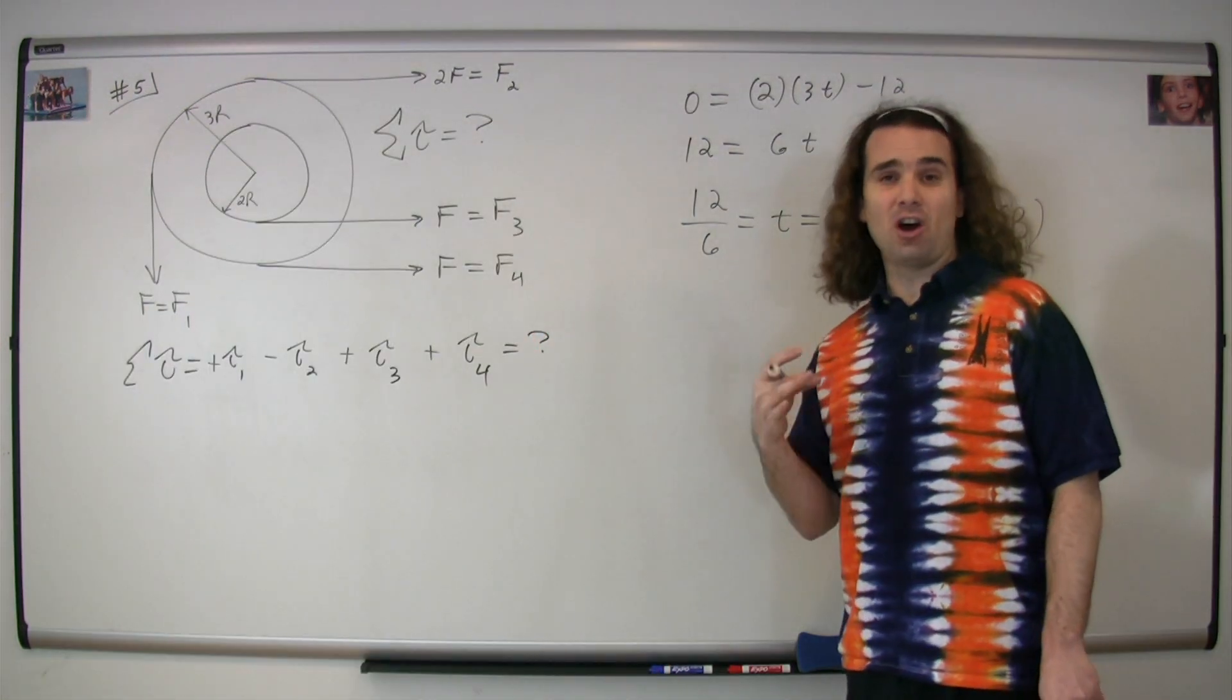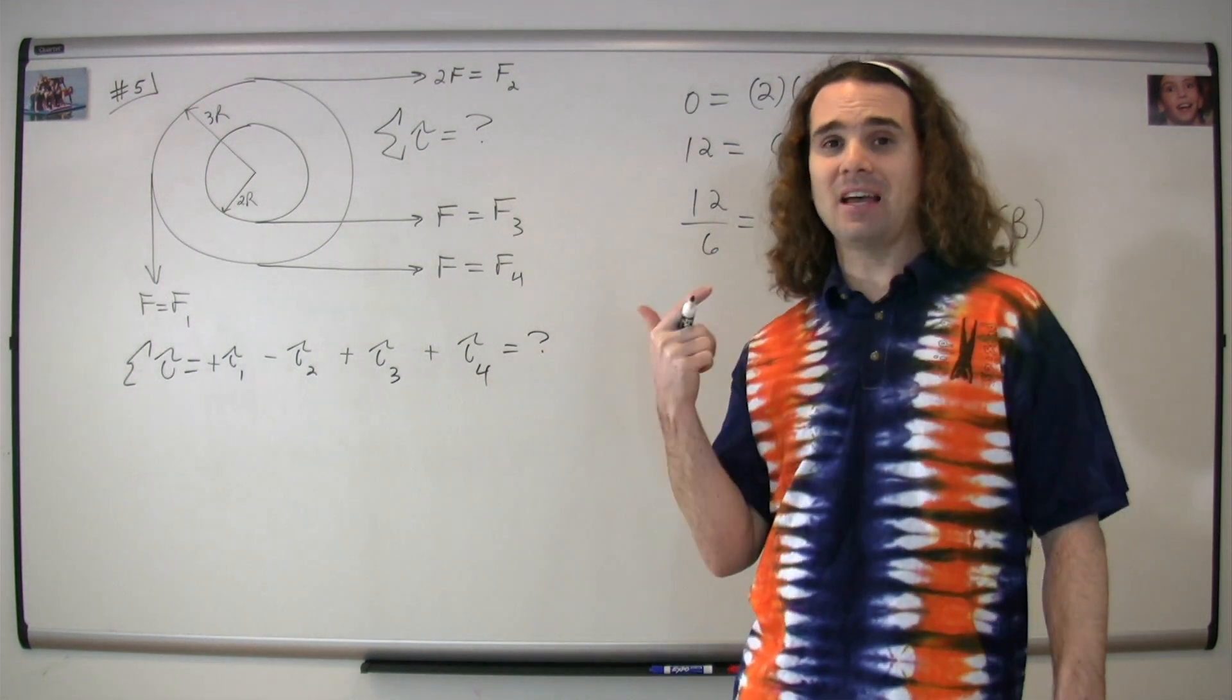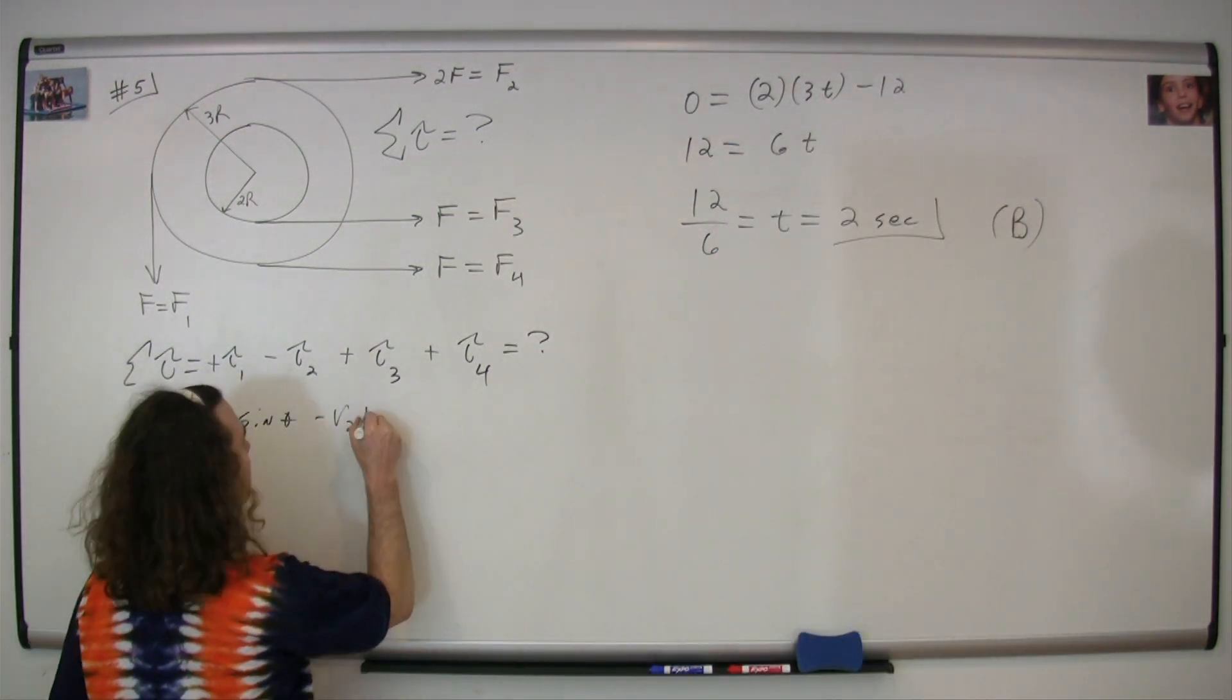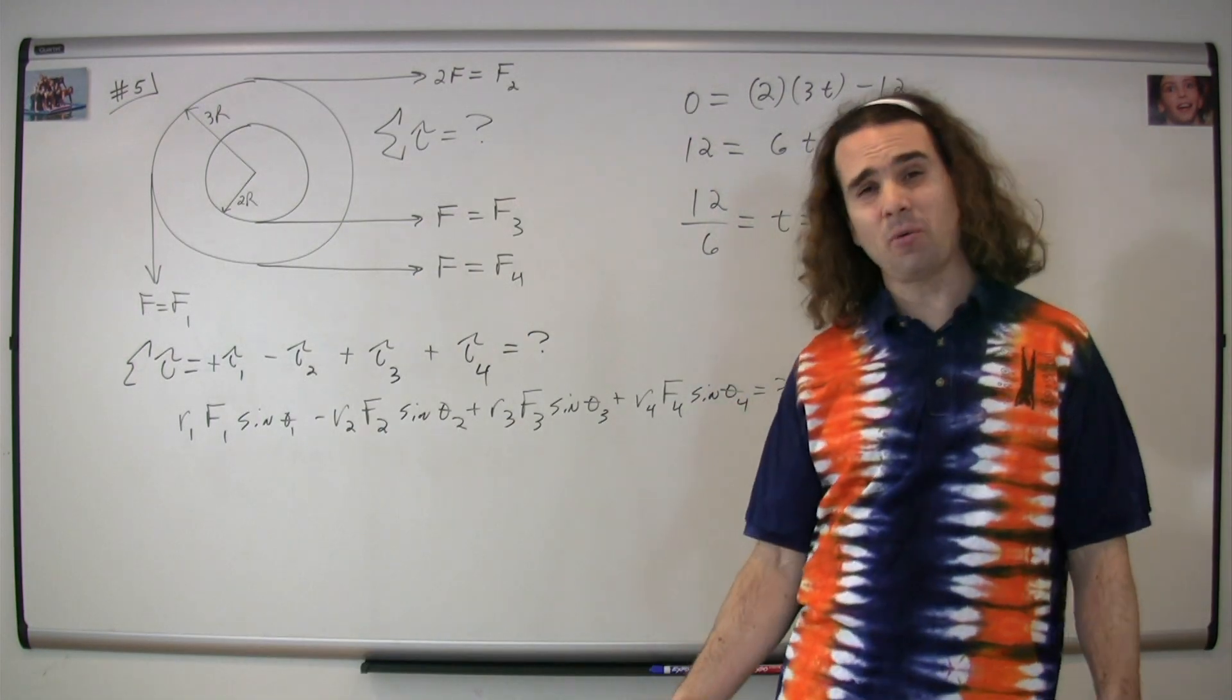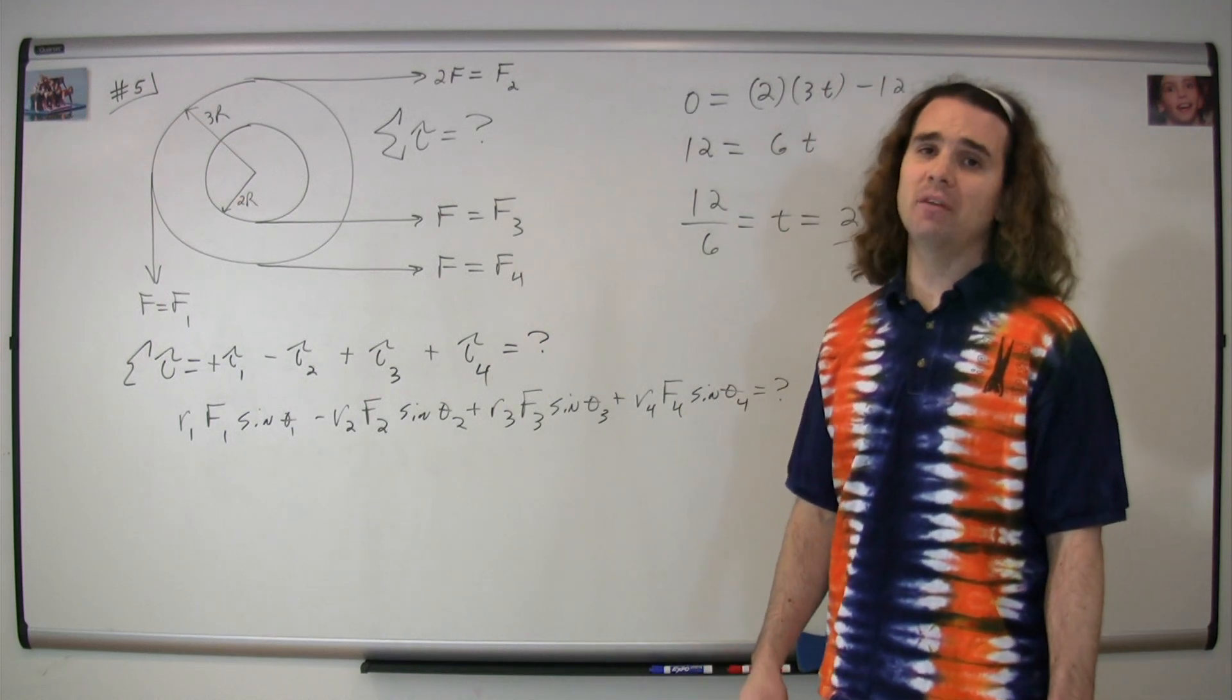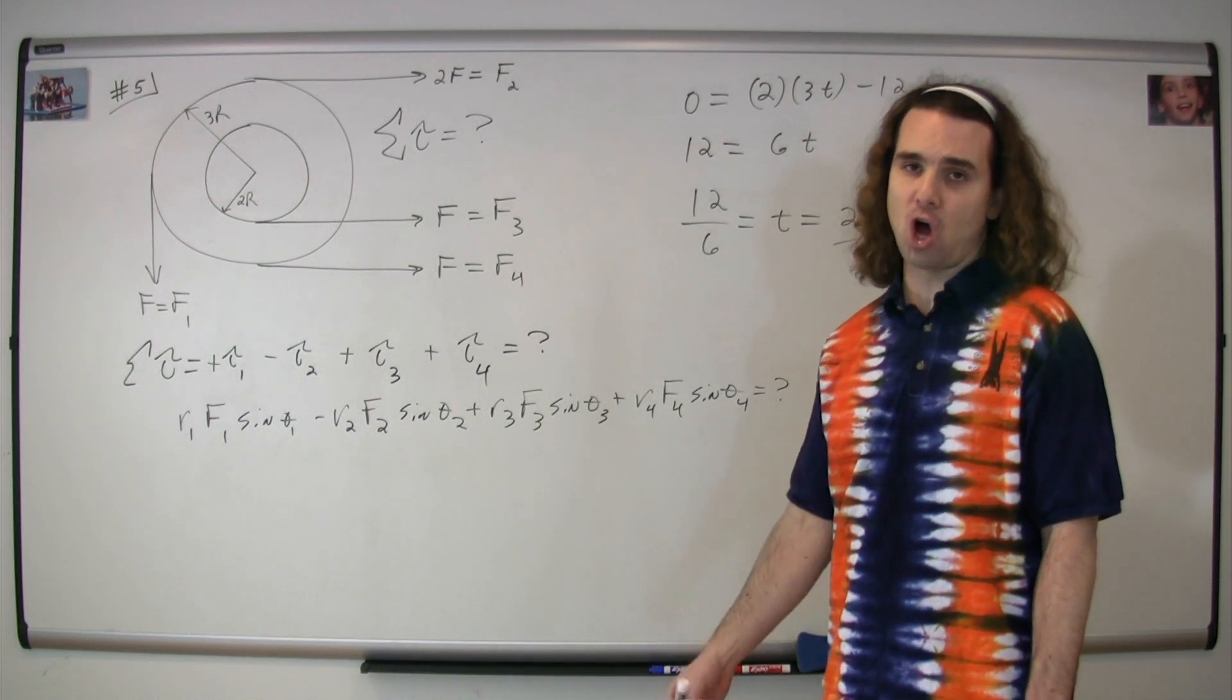The equation for torque is RF sine theta, the lever arm times the force times the sine of the angle between the two. So we substitute the equation in for each of our four torques, and please notice that all of the angles are 90 degrees, and therefore the sine of 90 degrees is one, and they will all cancel out.